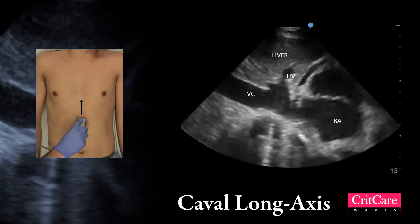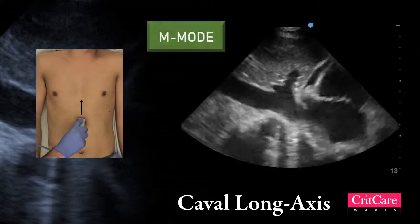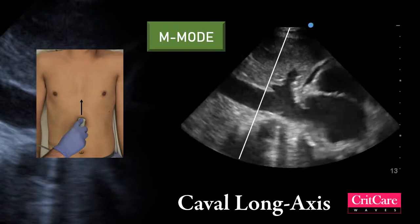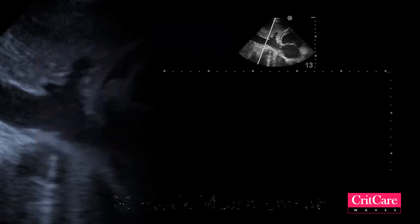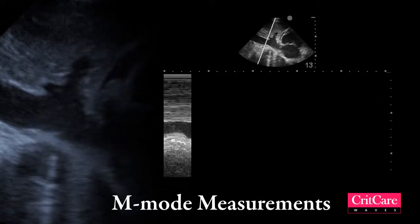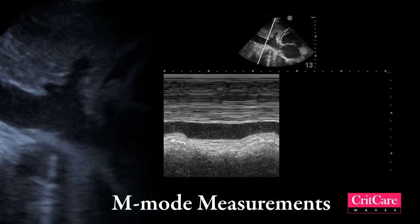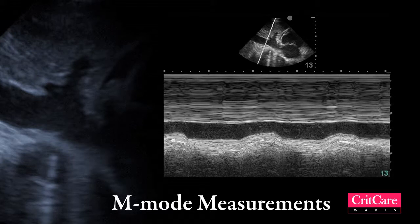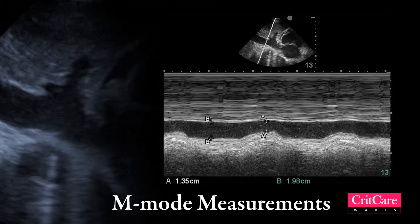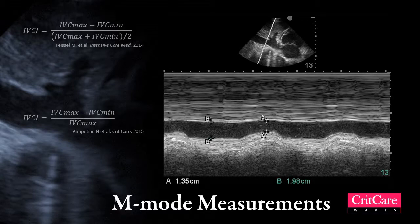You can use a function on the ultrasound called M-mode, which places a cursor through that area. What M-mode does is expand that out over time to show you the change in structures over that line. You can use this to measure the minimum and maximum diameter of your IVC.